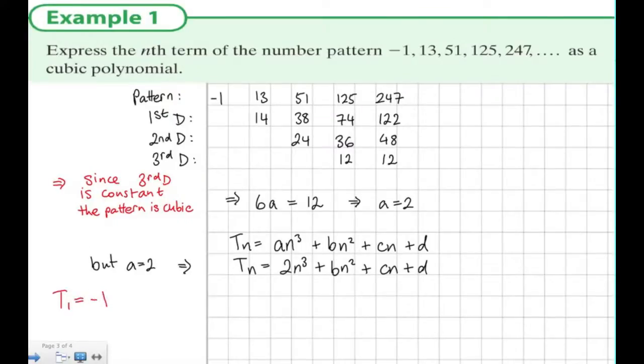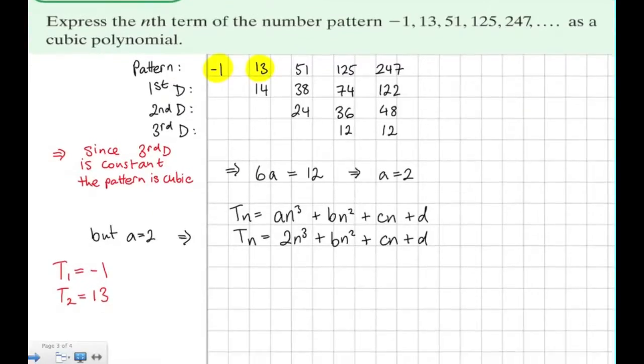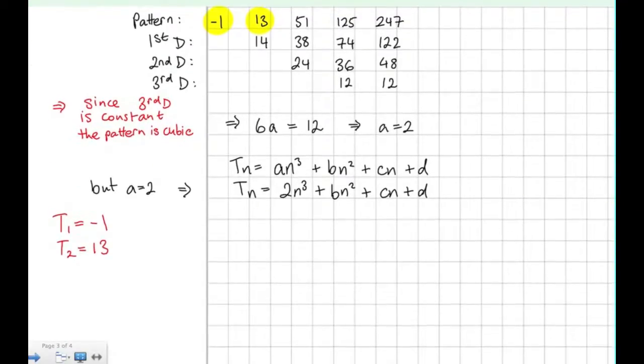So what do we know? Well, we know that term 1 is -1, term 2 is 13, and we also know that term 3 is 51. And we can use this information to generate three equations to find the three unknowns b, c, and d.